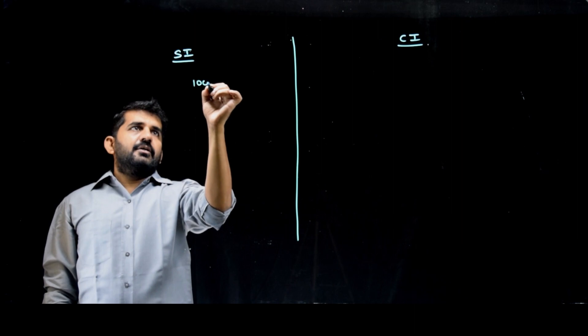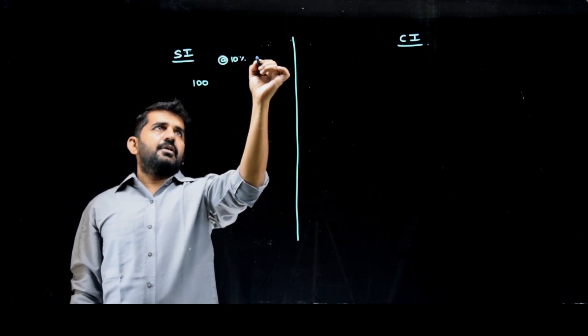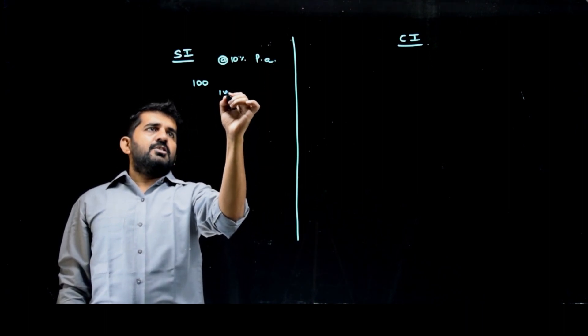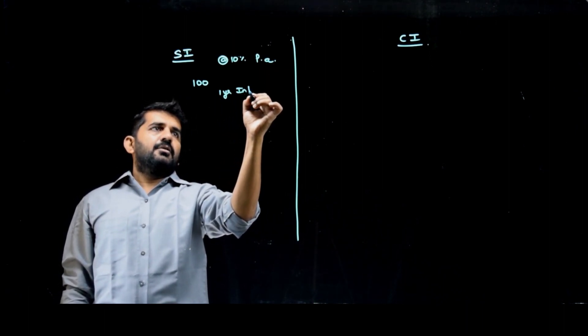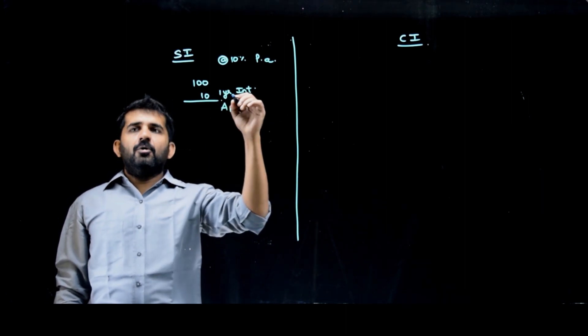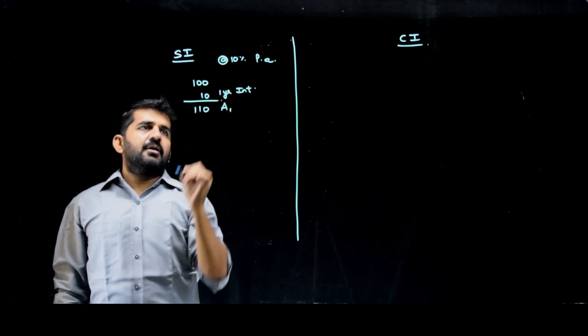I have invested 100 rupees at the rate of 10% interest rate per annum. Then first year's interest would be 10 rupees. Amount after one year, amount is principal plus interest. So amount after one year will be 110.